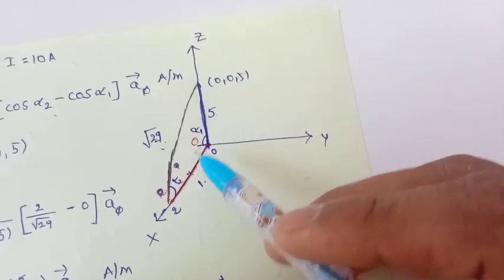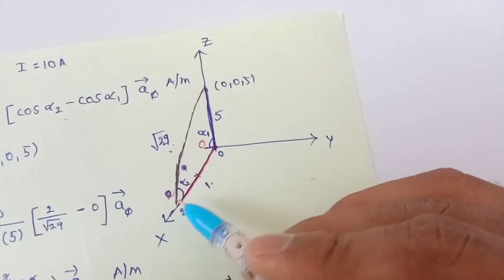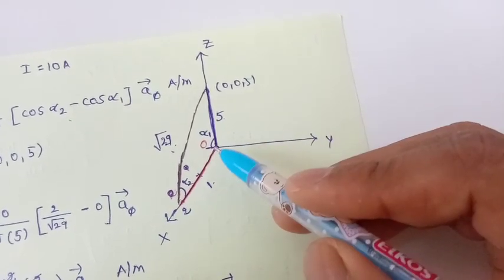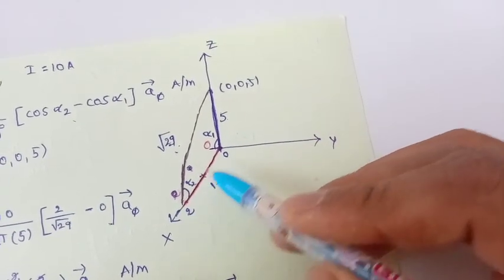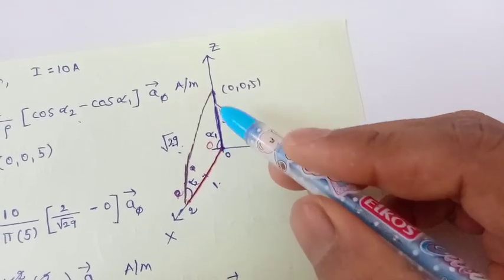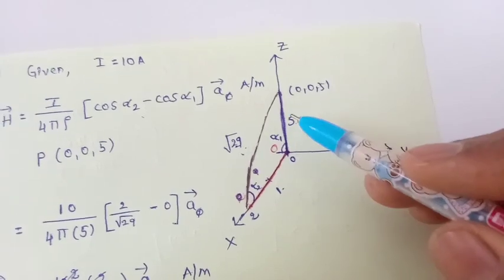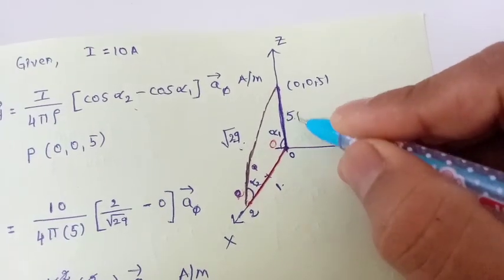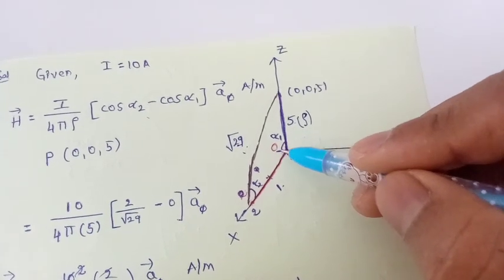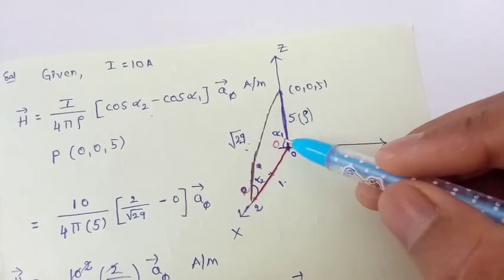Let us consider a Cartesian coordinate system x, y, z. The conductor is given along the positive x-axis with length 2 meters. We draw a perpendicular distance from the point to the conductor. Since the point has only a z-axis component, the perpendicular distance rho becomes 5. We consider the starting angle as α1 and the ending angle as α2 with respect to the perpendicular distance.